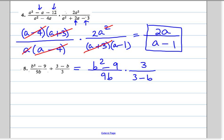The first numerator is called a difference of two squares and that gets factored into B minus 3 times B plus 3.